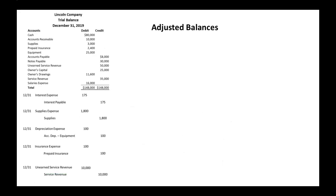So we need to figure out what these adjusted balances are going to be. Let's go piece by piece through our adjusting entries. First of all, interest expense — we didn't have any interest expense before, so we will show interest expense with a balance of $175. Interest payable: we didn't have any interest payable either, so its balance on the adjusted trial balance will just be $175.